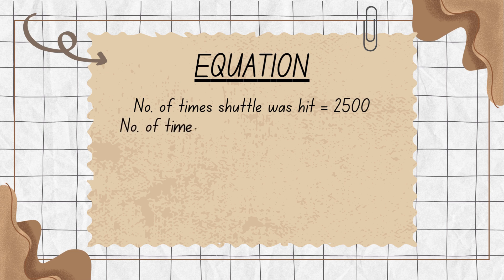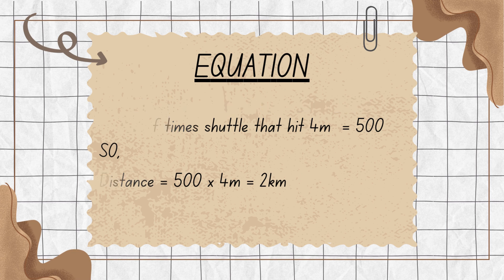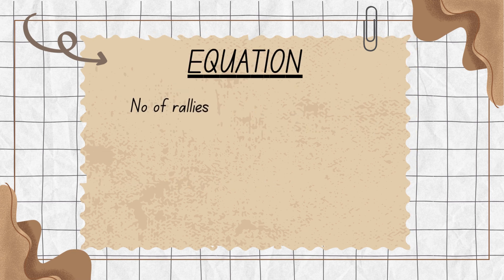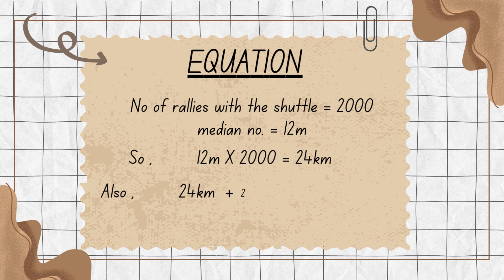500 of them covered let's say 4 meters — short distance — which is 500 × 4, about 2 kilometers. 2,000 times it went end to end, where we could assume a medium number of let's say 12 meters, because some could have been mid-court as well. So 12 meters multiplied by 2,000 gives you 24 kilometers. 24 plus 2 — your answer is 26 kilometers.